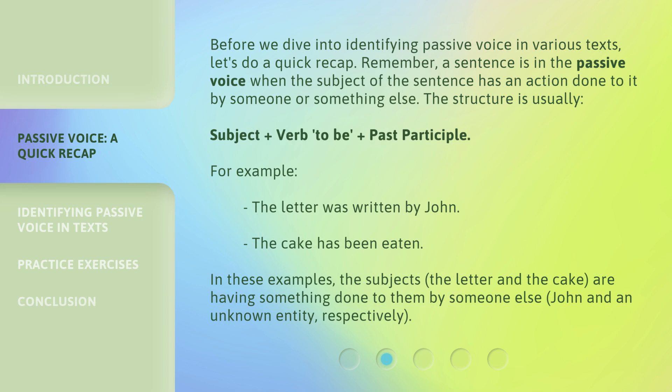Before we dive into identifying passive voice in various texts, let's do a quick recap. Remember, a sentence is in the passive voice when the subject of the sentence has an action done to it by someone or something else. The structure is usually: subject + verb to be + past participle. For example, 'The letter was written by John.' 'The cake has been eaten.' In these examples, the subjects — the letter and the cake — are having something done to them by someone else, John and an unknown entity, respectively.